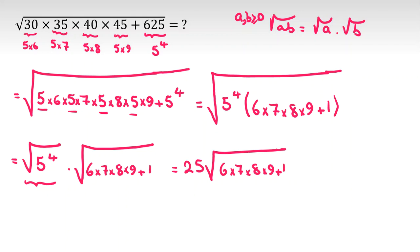Now I multiply 6 by 9, it is what? 54. 7 times 8 is 56. It will be 25 times square root of 54 times 56 plus 1.